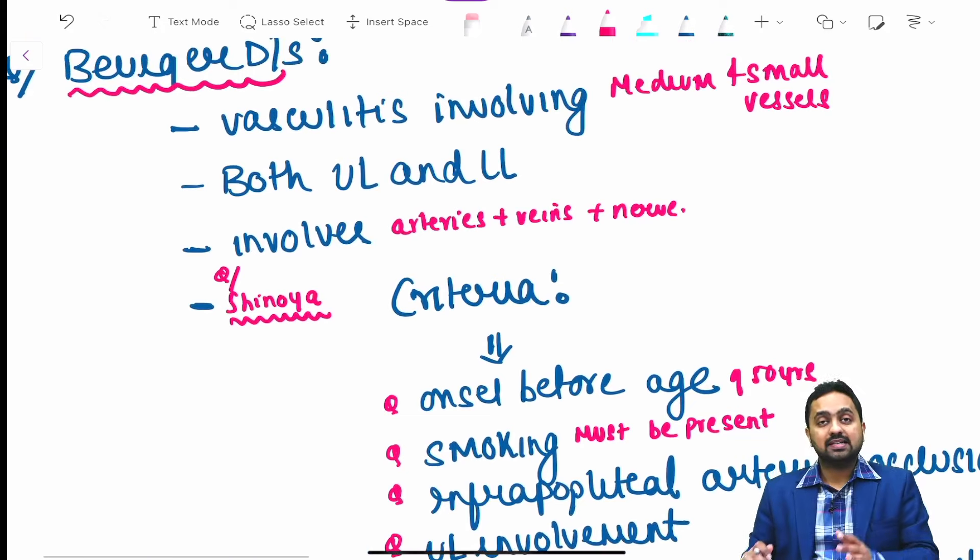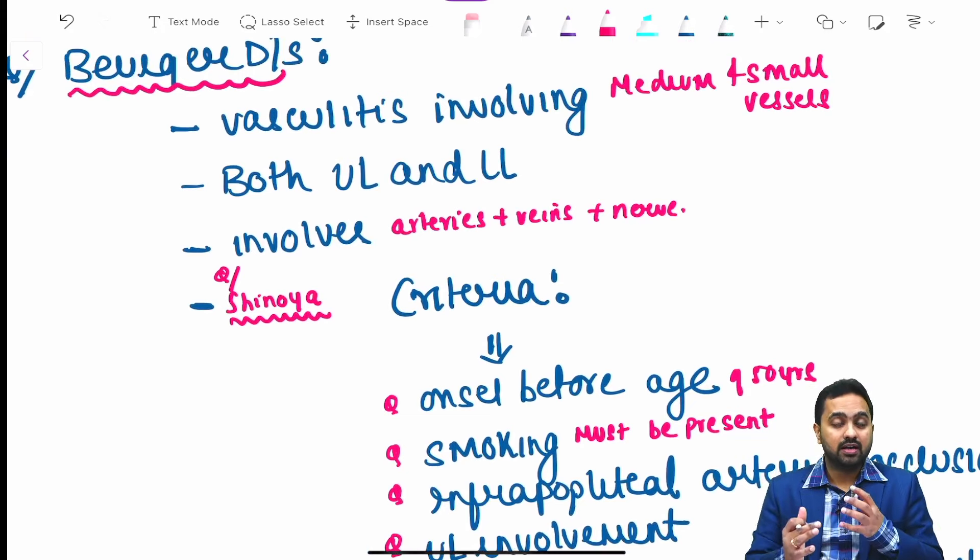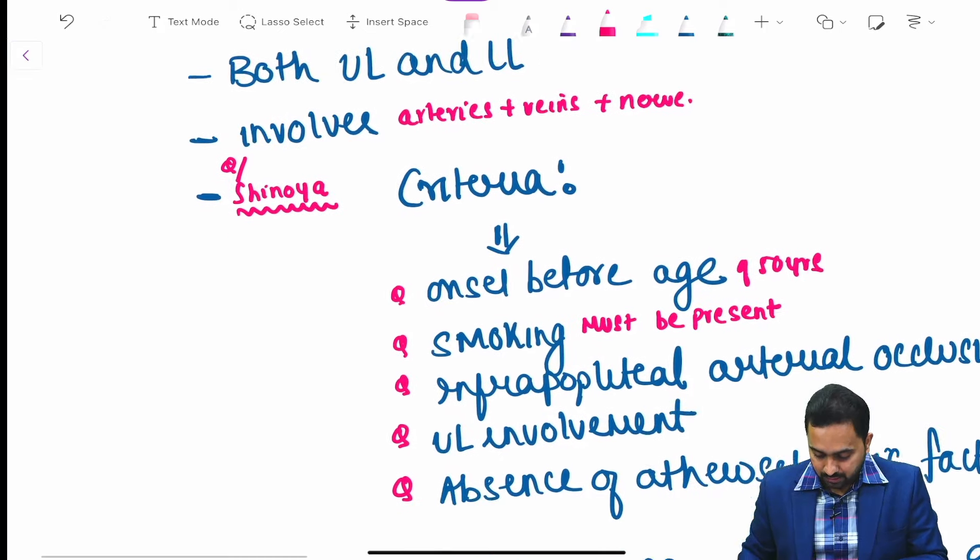Upper limb involvement and absence of atherosclerotic factors other than smoking should be present. When given a clinical scenario, Shionoya criteria will form your diagnosis of whether it is Buerger disease or not.